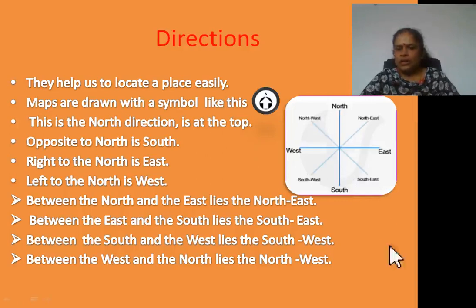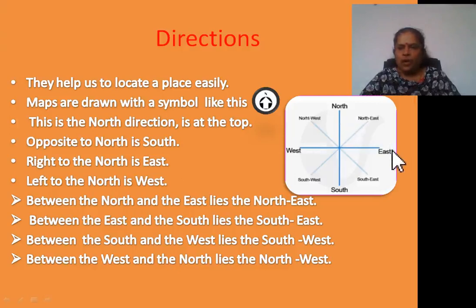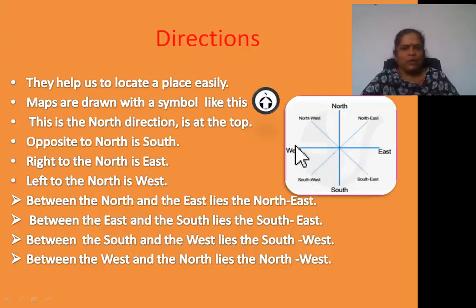Opposite to the north is south. See — north's opposite direction is south. Right to the north is east. See the north direction here — the right side is the east direction. And to the left is west direction. Between the north and east, the northeast lies. Between the east and south, the southeast direction lies. Between the south and west, the southwest direction lies. Between the west and north, the northwest direction lies.